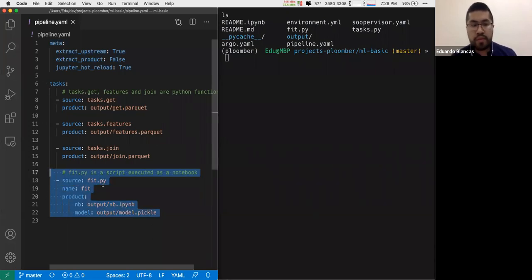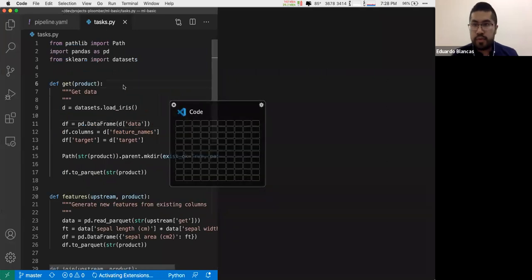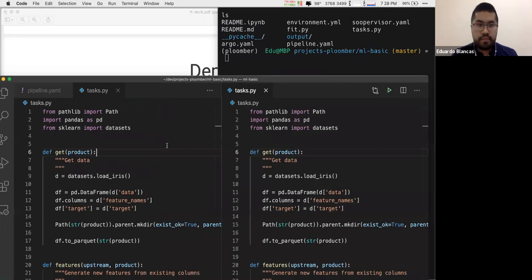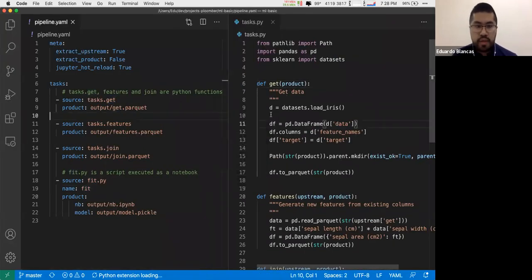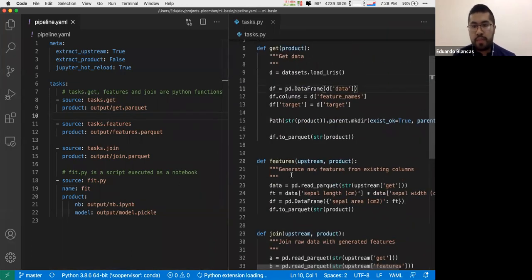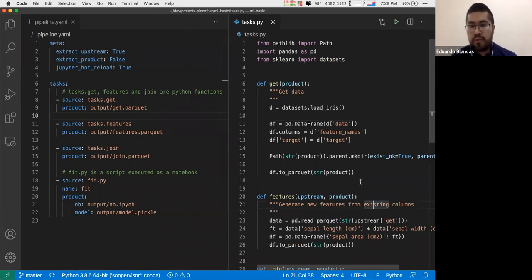The only two things required to declare a task are source, which is the source code for the task, and the product, which is the output this task is going to generate. For this simple pipeline, we have four tasks. Three of them are functions, and the last one is a script. My first task is a function declared in a tasks module with the name get. Let's open that file and put this side by side. You can see that I have get, features, and join.